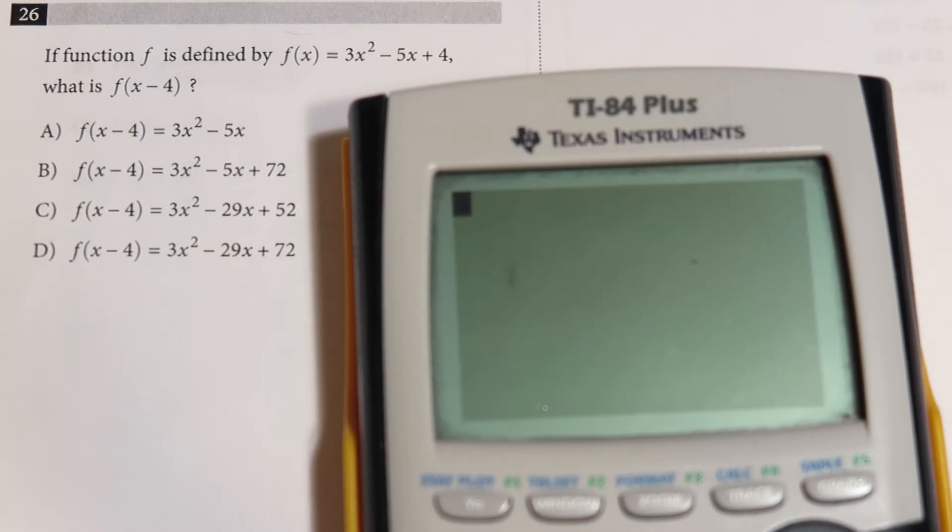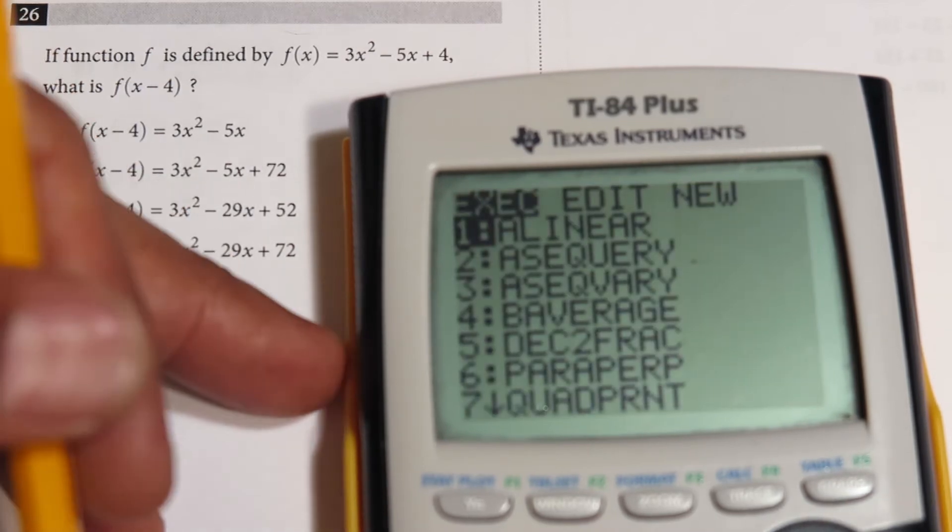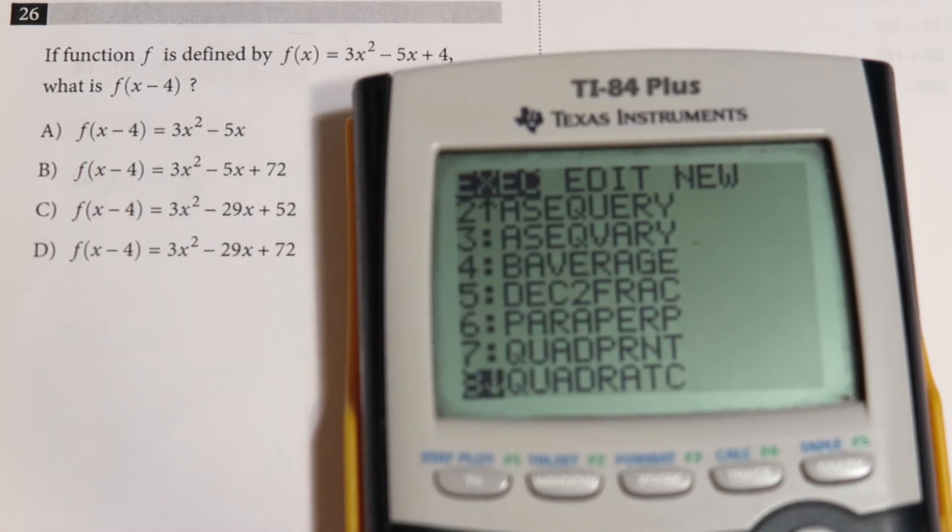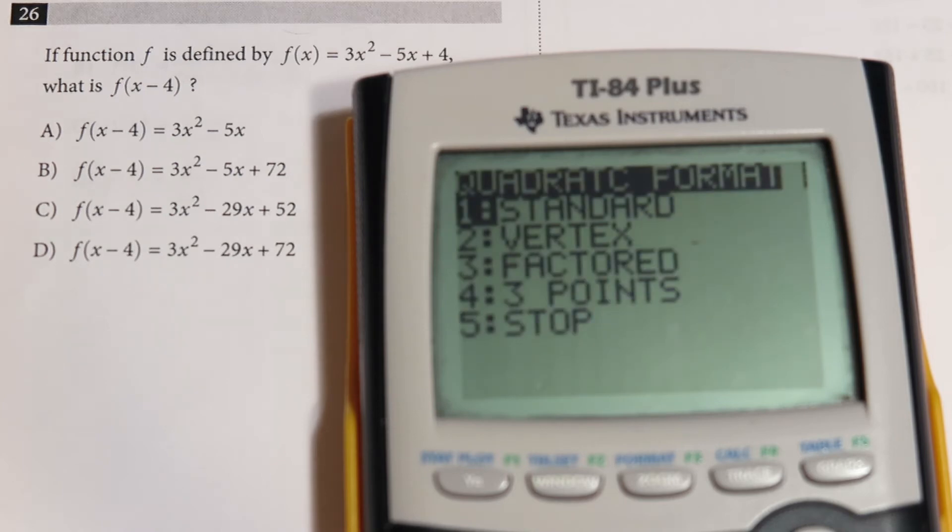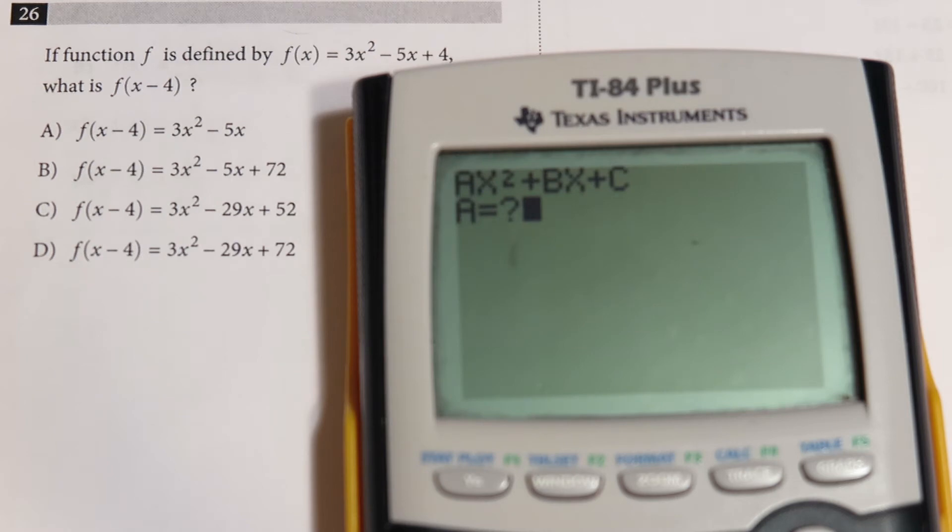I would go to programs, then down to quadratic, press enter, press enter again. Since this is in standard form, I'm going to choose option one. It's going to be 3, negative 5, and then plus 4.